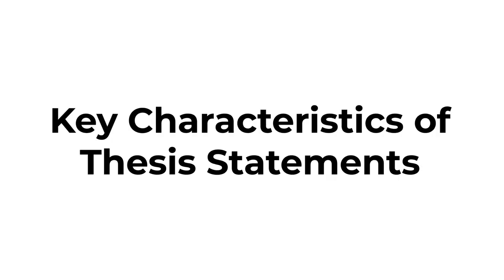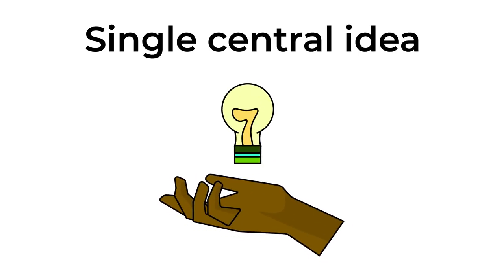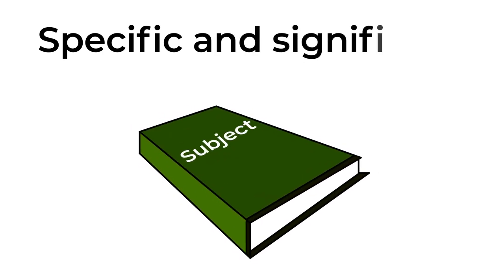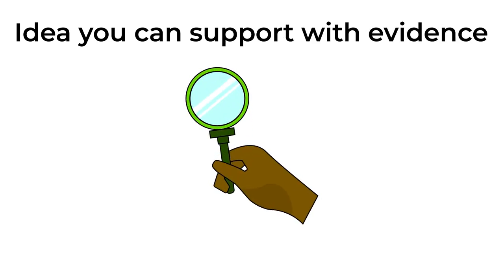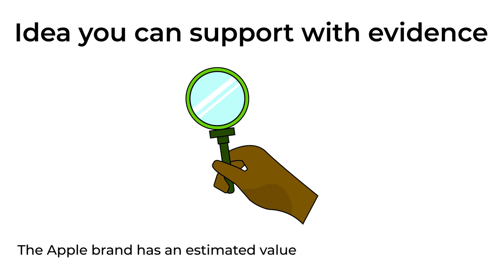The following are key characteristics of thesis statements. First, your thesis statement should narrow your subject to a single, central idea. Second, your thesis statement should claim something specific and significant about your subject. It should be an idea that you can support with evidence. It should not be a fact. For example, the Apple brand has an estimated value of 98.3 billion U.S. is a fact and therefore not an effective thesis statement.